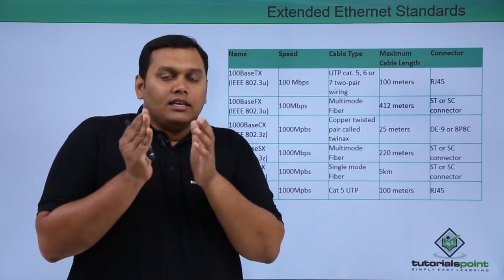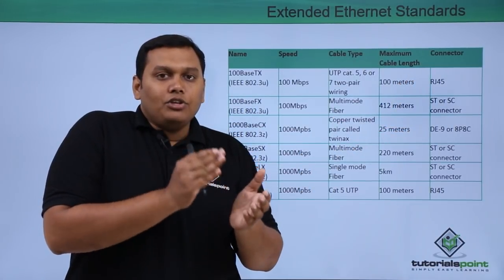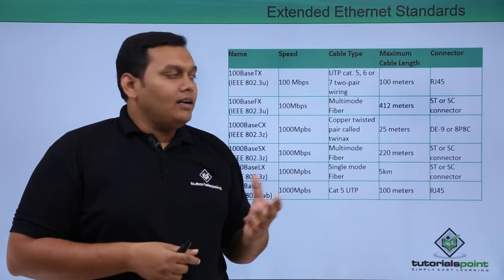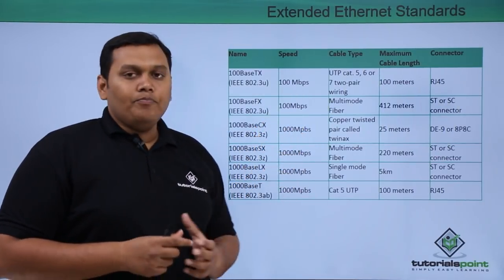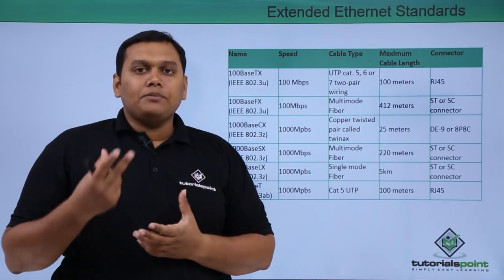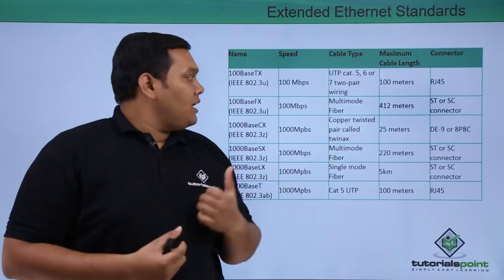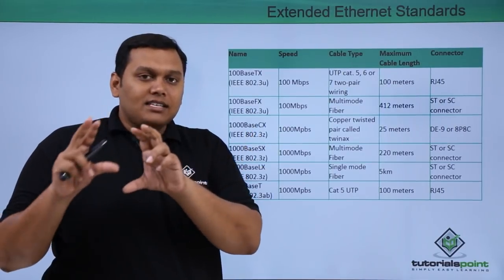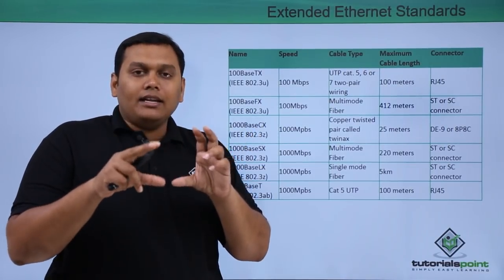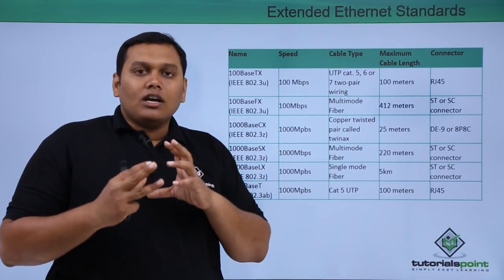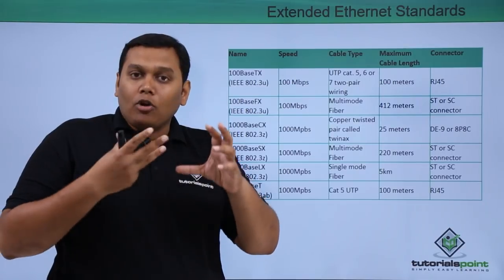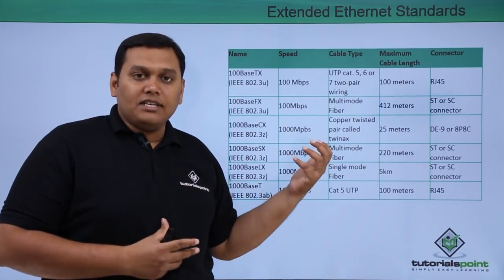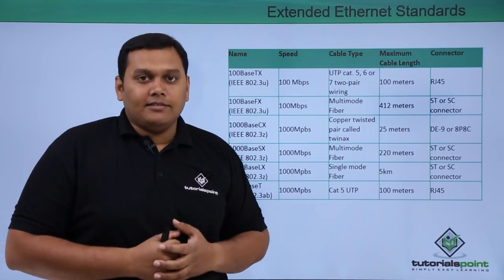These are the Ethernet standards used in the physical layer, categorized by cable types and speeds, covering Fast Ethernet, Gigabit Ethernet, and fiber optical Ethernet used at the physical layer.